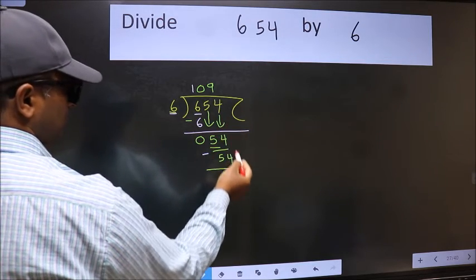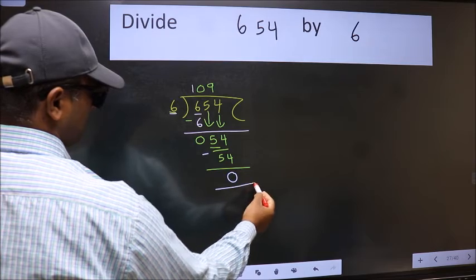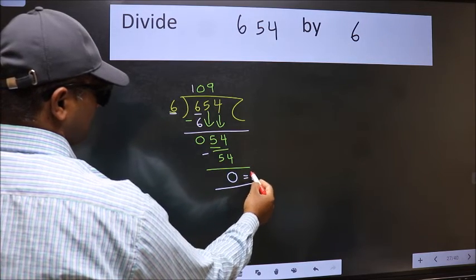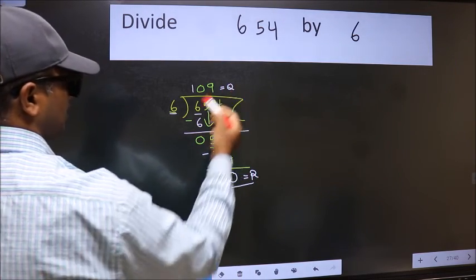No more numbers to bring it down. So, we stop here. This is our remainder and this is our quotient. That's right.